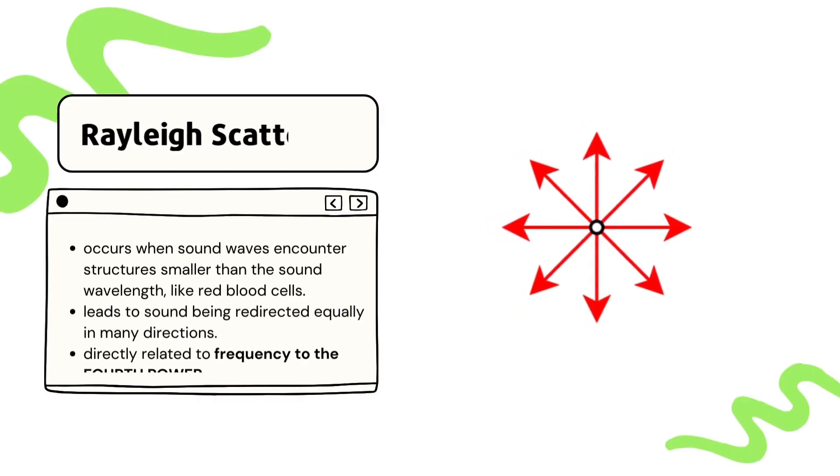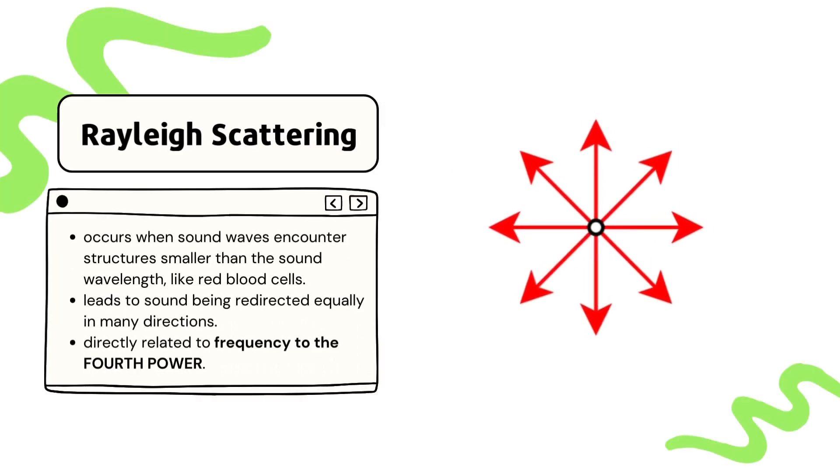Now let's dive into a special type of scattering known as Rayleigh scattering. This type of scattering occurs when sound waves encounter particles or structures that are smaller than the wavelength of the sound wave. In clinical imaging, Rayleigh scattering is typically seen when ultrasound interacts with red blood cells. A key point to note is that Rayleigh scattering leads to the dispersion of sound waves equally in multiple directions, contributing to a loss of energy and attenuation.